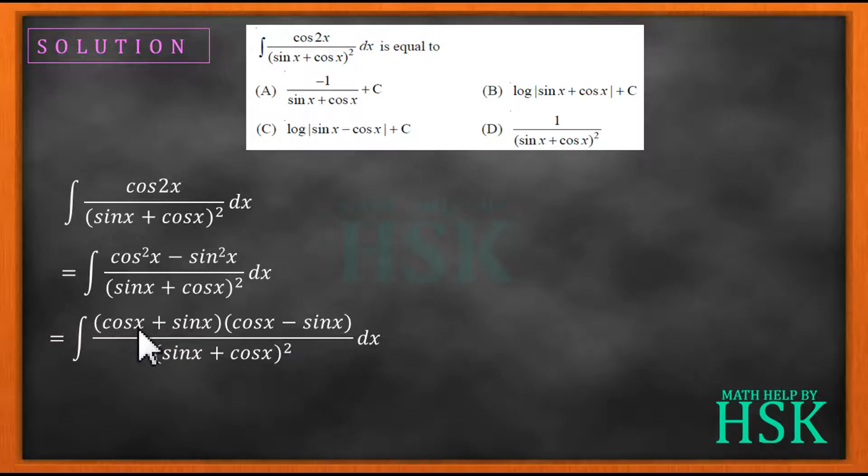So I'm going to get cos x minus sine x upon sine x plus cos x dx. Now if I assume sine x plus cos x equal to t, then on differentiation I'm going to get cos x minus sine x dx is equal to dt.